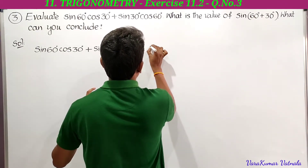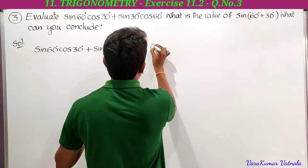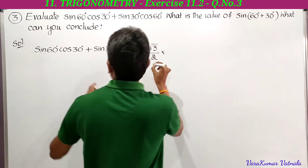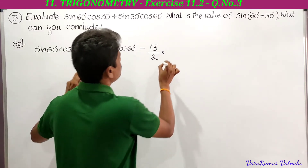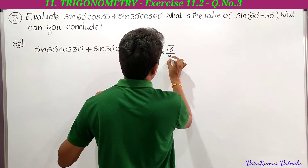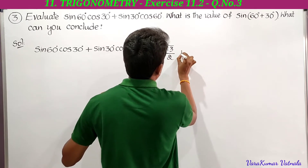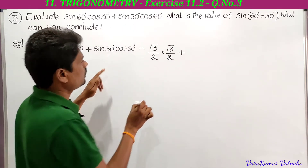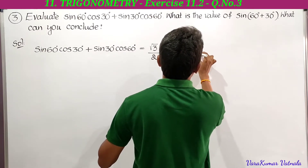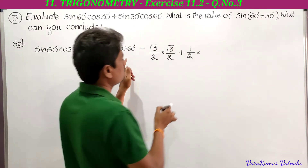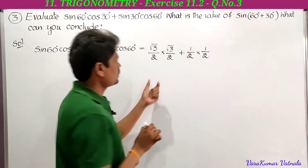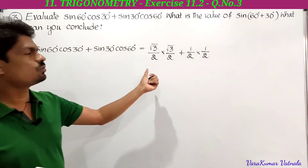Sine 60 is root 3 by 2, and cos 30 value is also root 3 by 2. Plus, sine 30 value is 1 by 2, multiplied by cos 60 value which is also 1 by 2. So we have now substituted all the values.